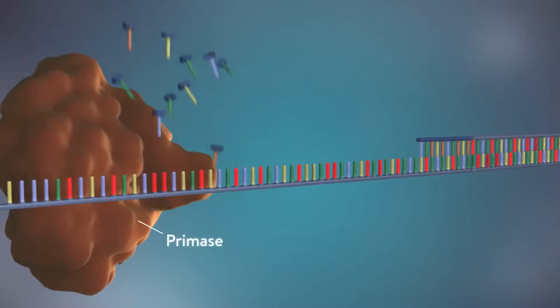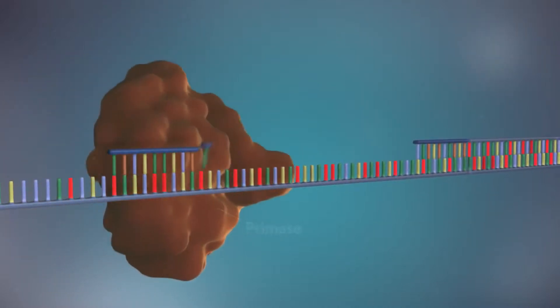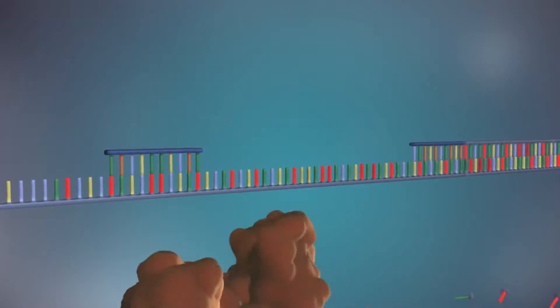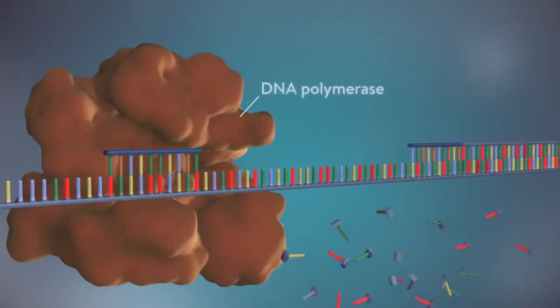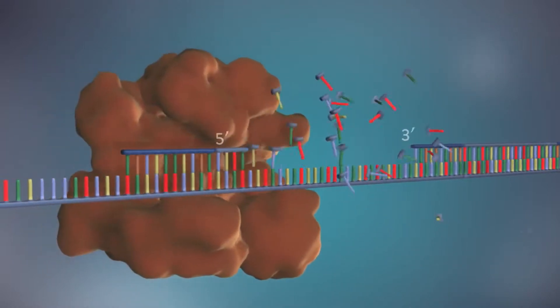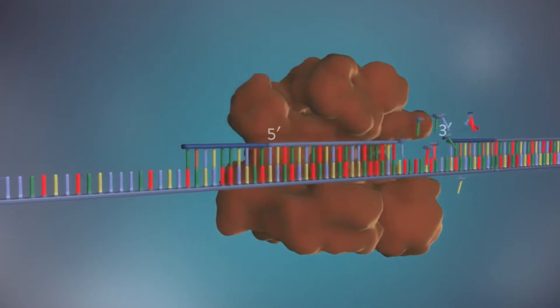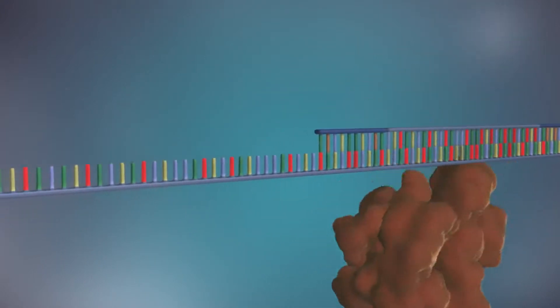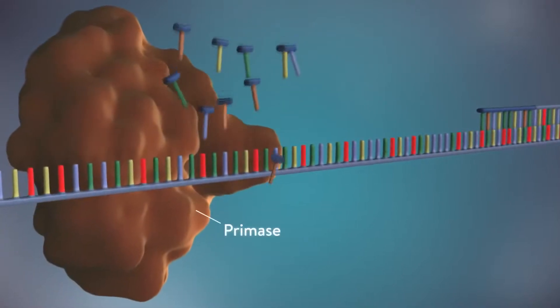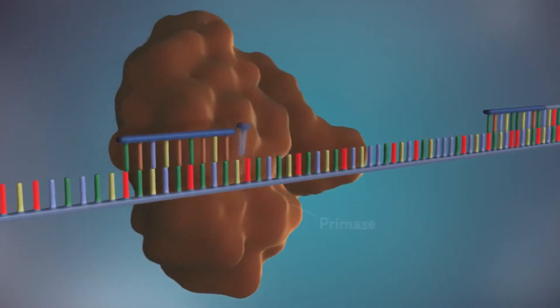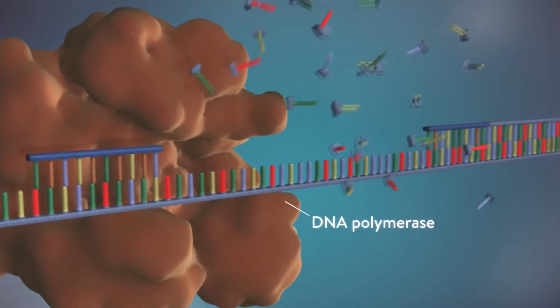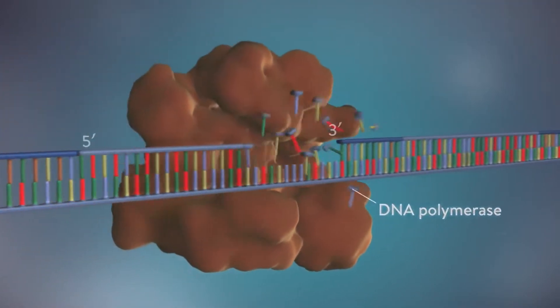Each fragment is started with an RNA primer. DNA polymerase then adds a short row of DNA bases in the five prime to three prime direction. The next primer is then added further down the lagging strand. Another Okazaki fragment is then made and the process is repeated again.